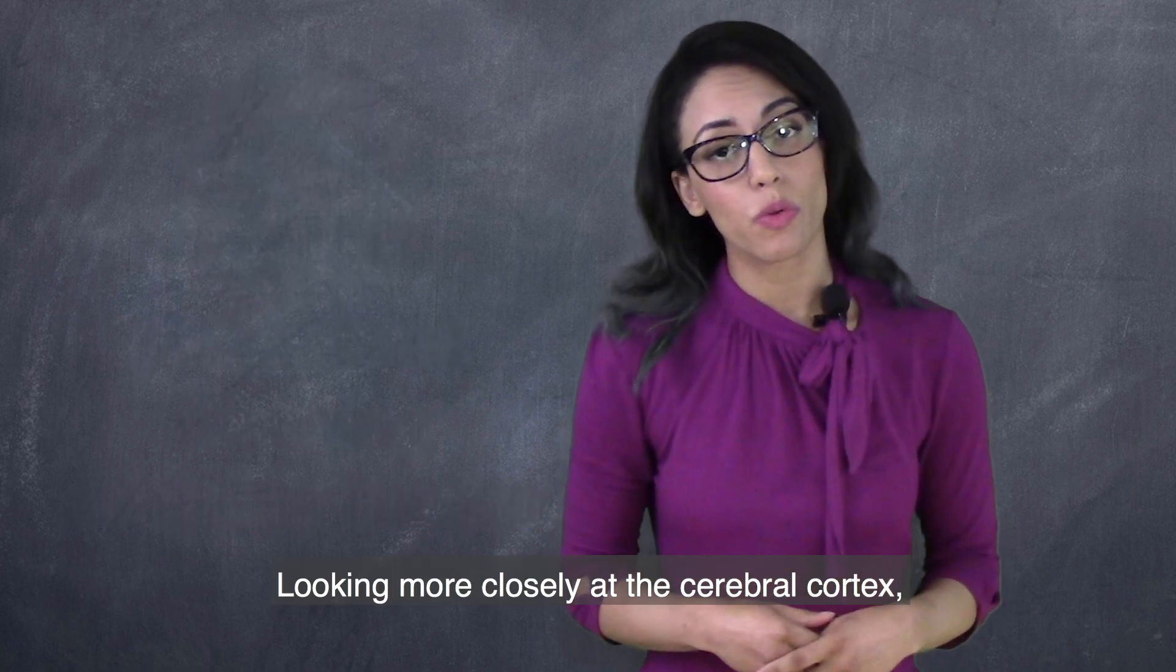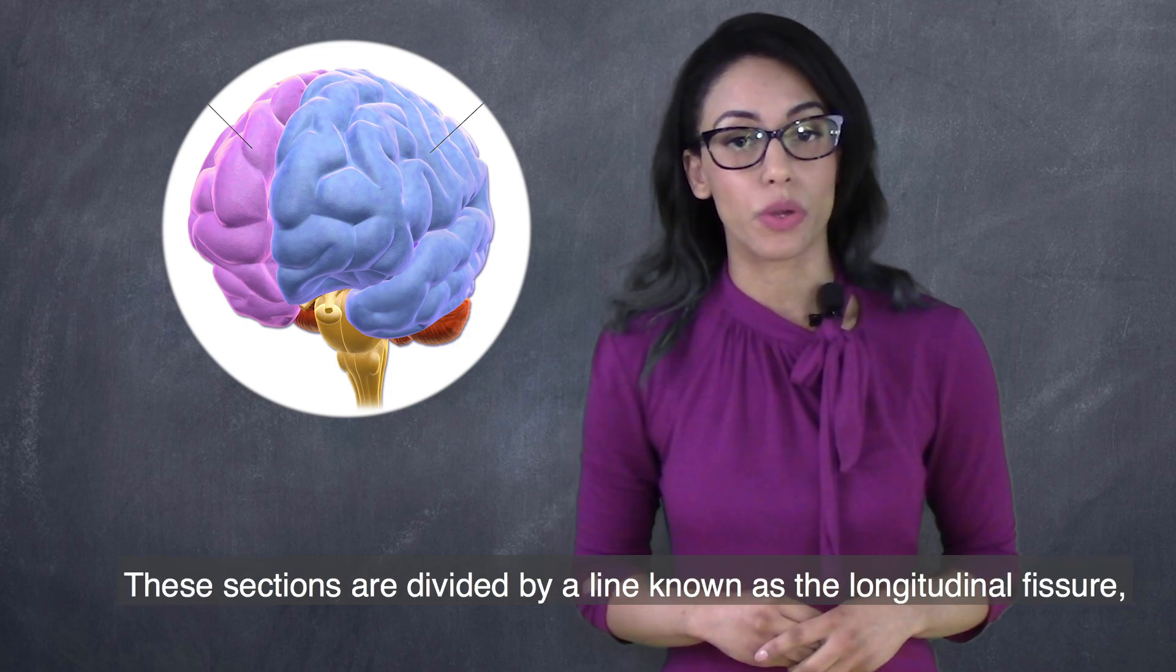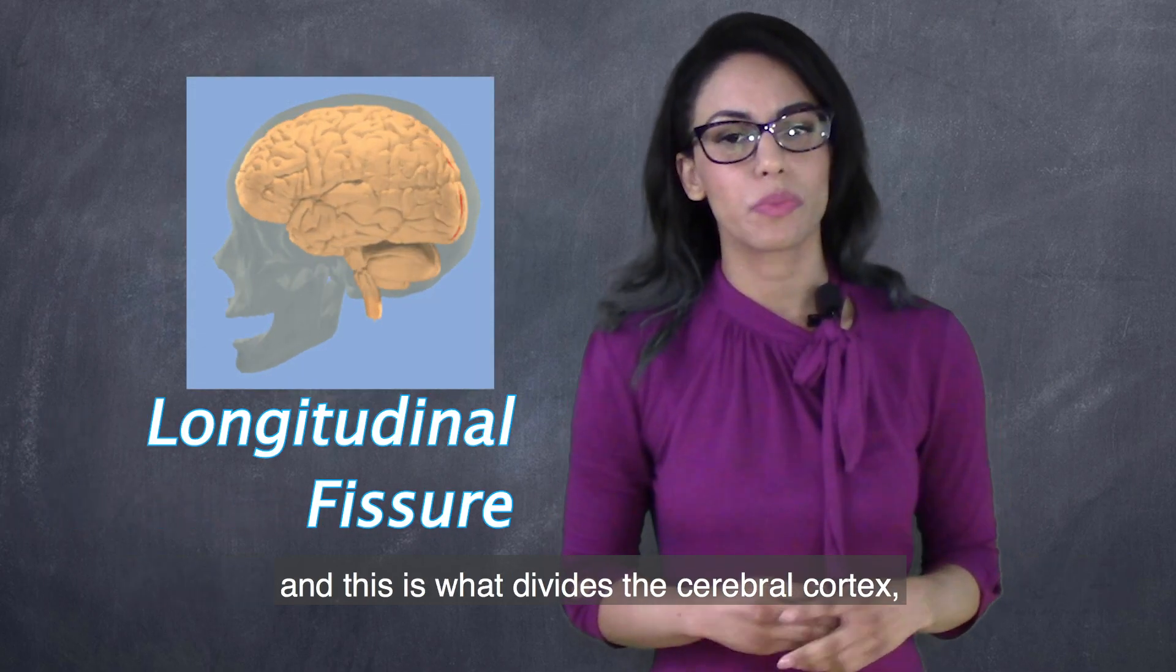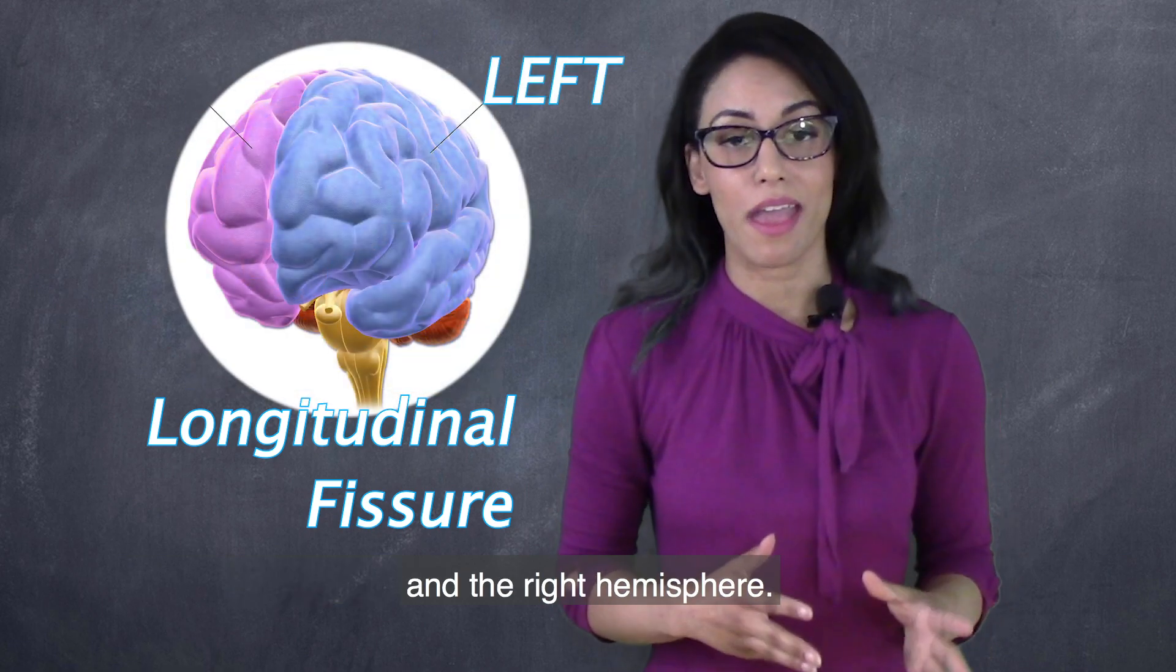Looking more closely at the cerebral cortex, it is clear that there are two distinct parts. These sections are divided by a line known as the longitudinal fissure, and this is what divides the cerebral cortex straight down the middle into the left hemisphere and the right hemisphere.